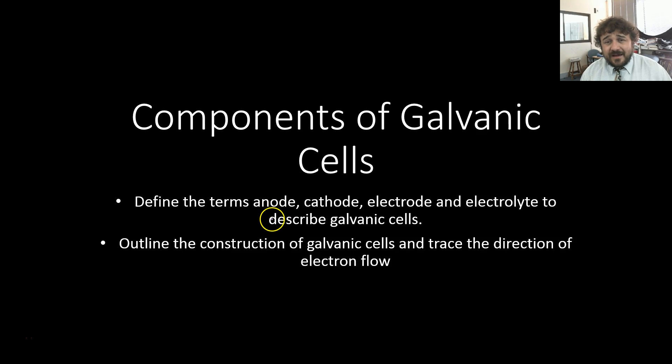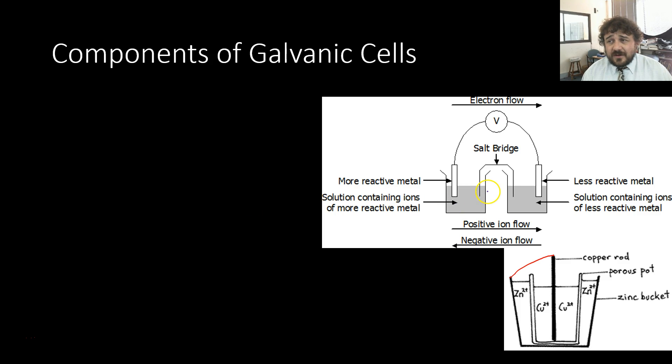We're going to talk about galvanic cells and how they're built. First off, we'll start with two different diagrams of galvanic cells. We've got the one here which is your very standard galvanic cell, the one you're building in class and you'll see the most. We've got another one here which is a bit less standard but still equally valid, and we'll have a look at that as well.